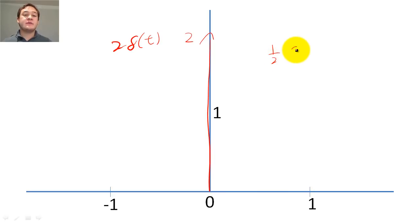If we add or subtract from the argument of the delta function, we shift the function.